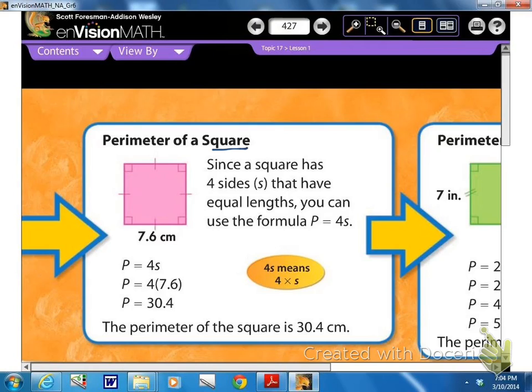So now a square has 4 sides, and they use S for sides, that have equal length. So you can use the formula, perimeter of a square is 4 times S, because every side is the same, which is why they make these little hash marks here, to show that each side is congruent, or the same length.